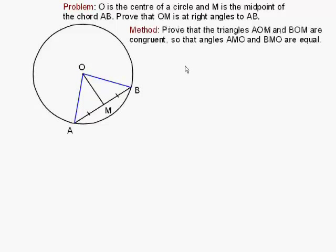And what we have to do now is to prove that those two triangles are congruent. And that will have the consequence that if the triangles are congruent, those two angles must also be the same. Now, how do we go about doing that?